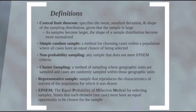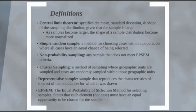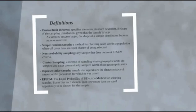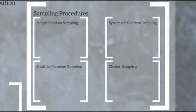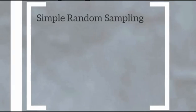A representative sample is fairly self-explanatory — your sample represents the characteristics of your population. EPSEM, the equal probability of selection method, states that each element must have an equal opportunity to be chosen for the sample, where each element refers to some particular characteristic of your population. Now let's get into sampling procedures: simple random sampling, systematic random sampling, stratified random sampling, and cluster sampling.